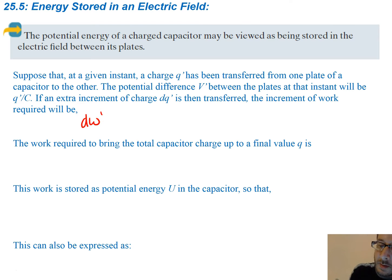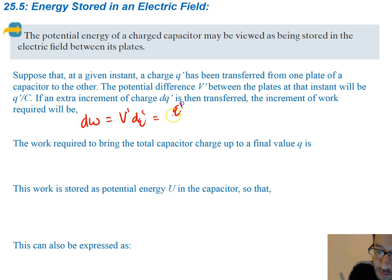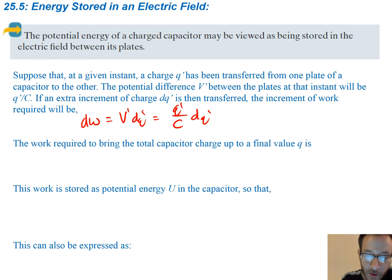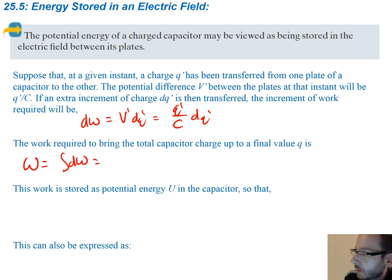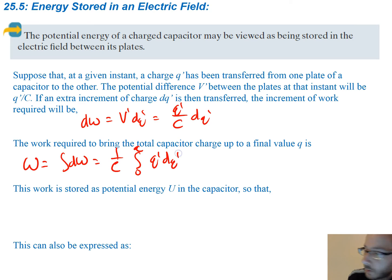A little increment of work, without the prime, is just going to be the voltage prime times the charge. Another way we can write that is Q' divided by the capacitance, DQ'. So I just changed the voltage to Q' over C. If I wanted to find the total work required to bring the total capacitor's charge to the final value of Q, you would just take the integral. So our full value of work will just be 1 over C times the integral from 0 to Q of Q' DQ', which is going to be Q squared divided by 2C.